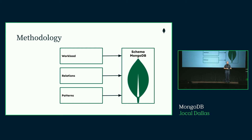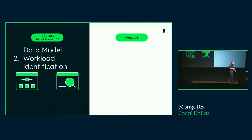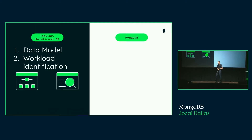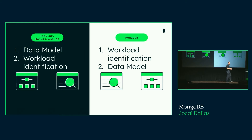The methodology is very simple: we're going to define the workload, describe the relationships, and then apply patterns. For those trying to map this to the relational world — yes, in the relational world we start with the ER diagram and later denormalize if needed. With MongoDB, we do the opposite: we take care of the workload first and then do the data model. This is because we now have big data and NoSQL.